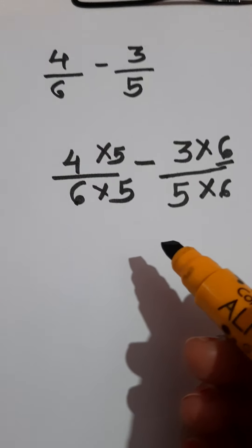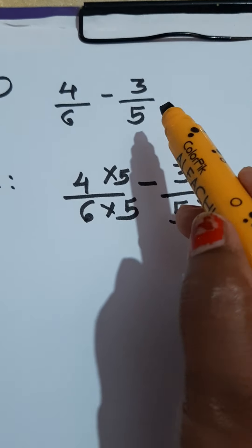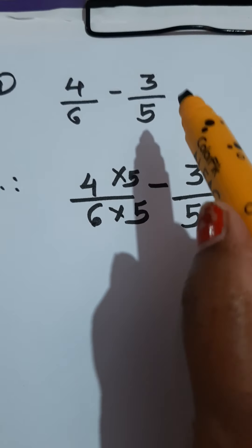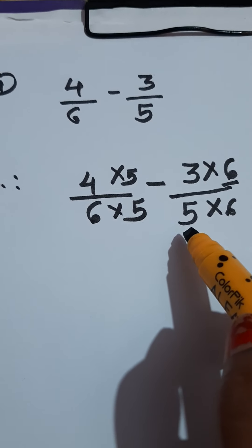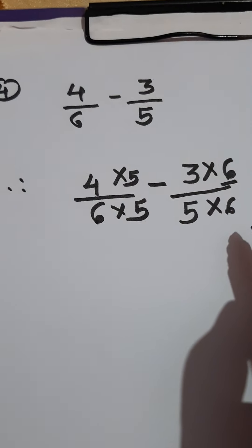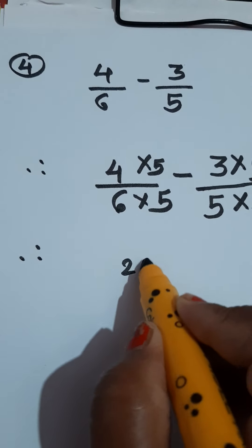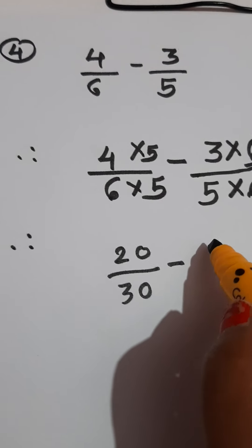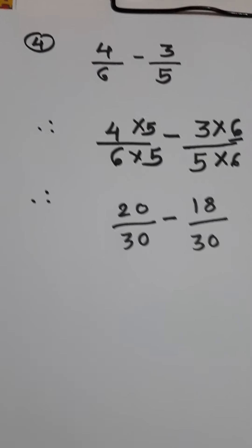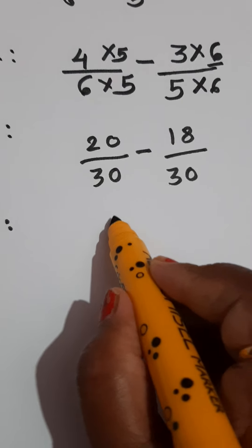I explain again: the first fraction is 4 upon 6. Multiply the first fraction by the second denominator, that is 5. Then give minus sign. Write down the second fraction: 3 upon 5. And multiply the second fraction by the first denominator, that is 6. Now do the multiplication: 4 fives are 20, 6 fives are 30, minus 3 sixes are 18, 5 sixes are 30. Now they are having equal denominators — they are like fractions — so easily we can subtract the numerators.